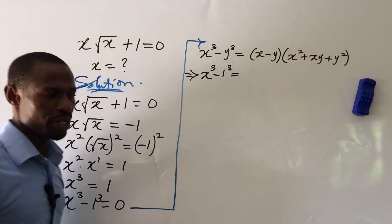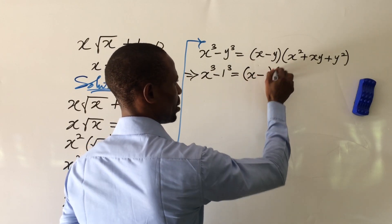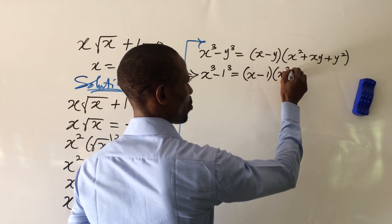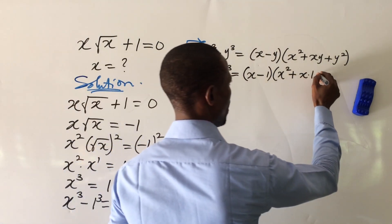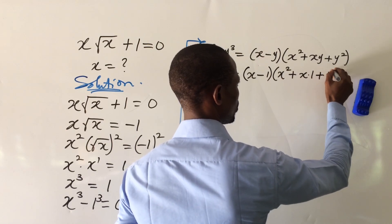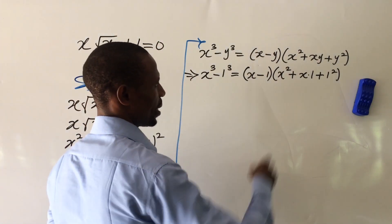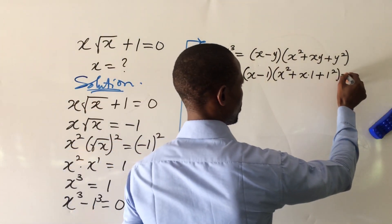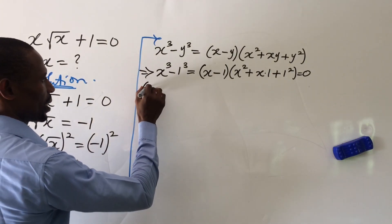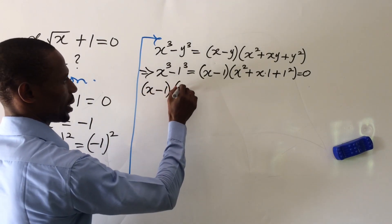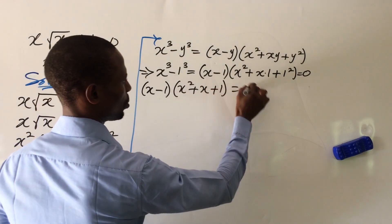This now implies that x to the power of 3 minus 1 to the power of 3 is equivalent to (x minus 1)(x squared plus x times 1 plus 1 squared), and we're having everything equal to 0. So from here, we're going to have (x minus 1)(x squared plus x plus 1) equal to 0.